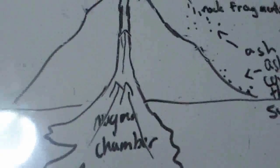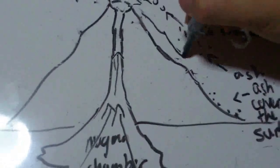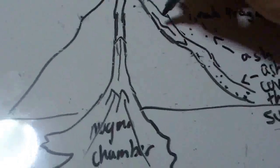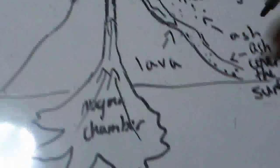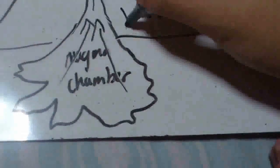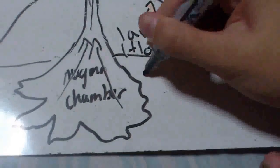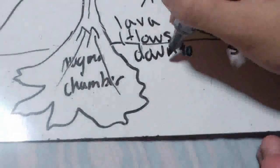Later, a new eruption of lava covers the ash layer and builds up the volcano. So, this is how a volcano erupts.